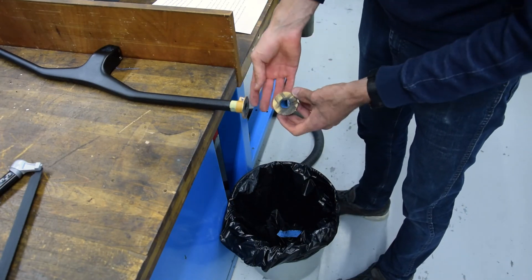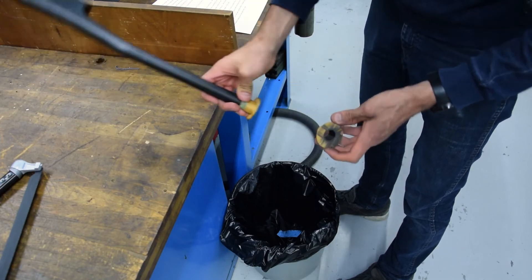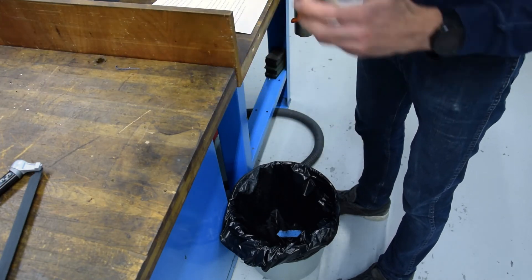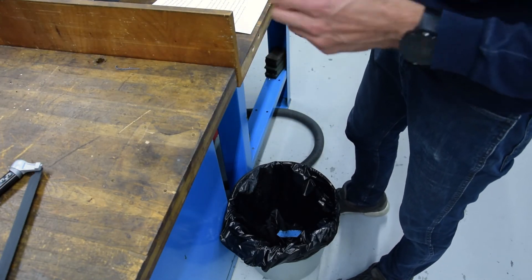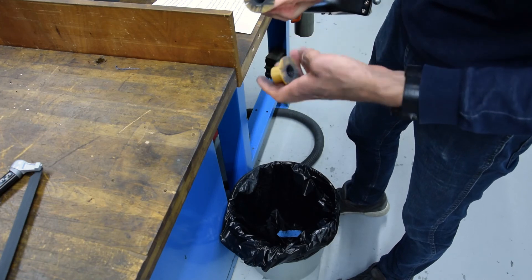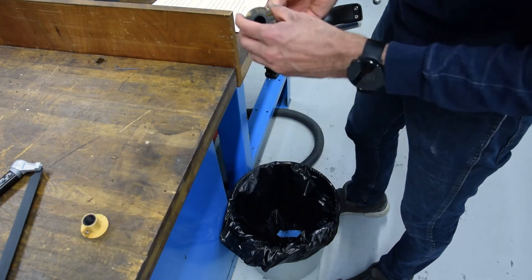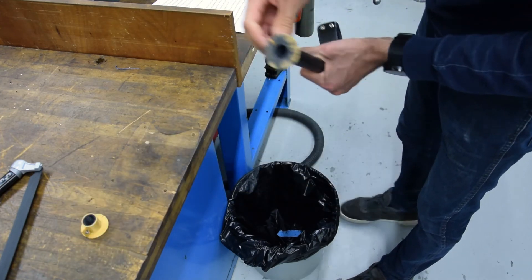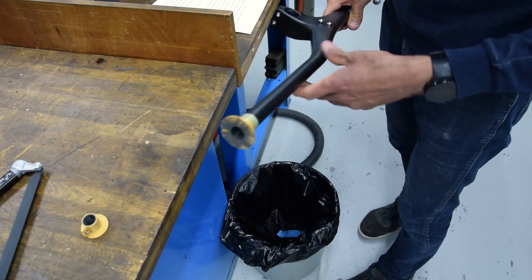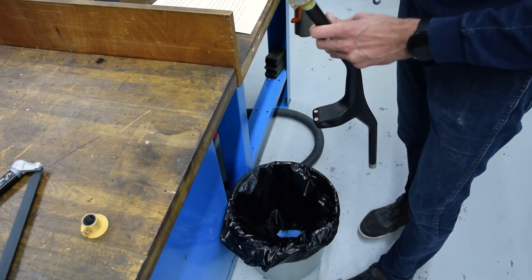All right, so we cut now also the other side of the handlebars and also here there is no delamination. So I dismount now this side and then we have a closer look at the bar ends.